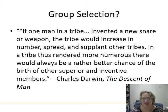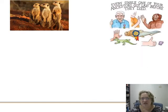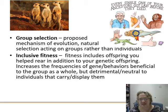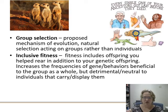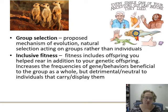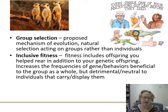Group selection: if one individual in a tribe invented a new snare or weapon, the tribe would increase relative to other tribes — social improvements. This is a proposed mechanism of evolution where natural selection acts on a group rather than an individual. It's contentious. It introduces the concept of inclusive fitness, where fitness includes offspring you help rear in addition to your own genetic offspring — since most members of your group are relatives, helping them raise their offspring benefits your shared genes.